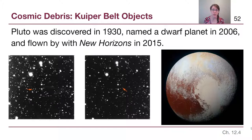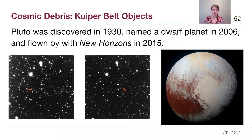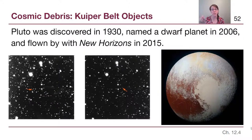Pluto was originally discovered in 1930. The two pictures on the left of the slides have arrows pointing out the tiny pinpoint of light that was Pluto. These were two separate images taken of the same patch of sky, and it was Clyde Tombaugh who discovered it using a blink comparator. Rather than playing the world's toughest spot-the-difference puzzle, the images go into a machine that created almost a two-frame GIF, going back and forth so you can see the object move.